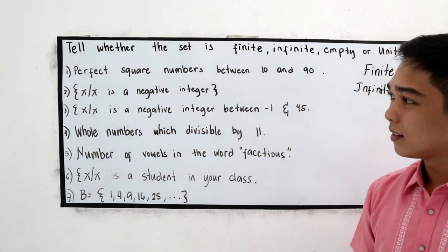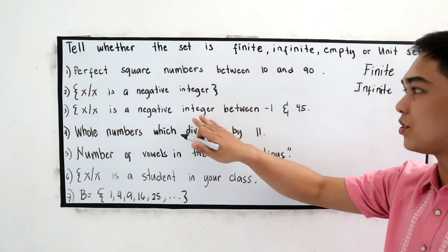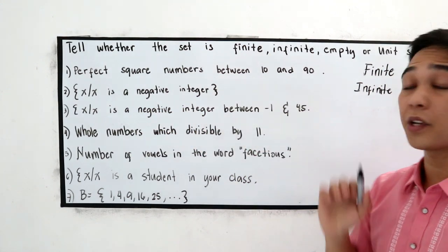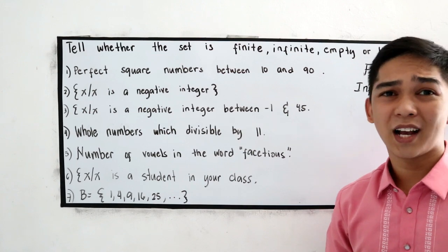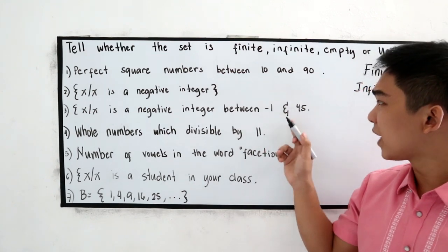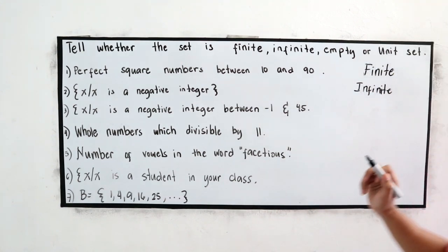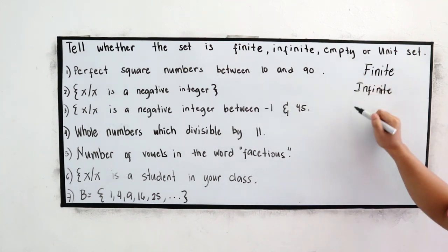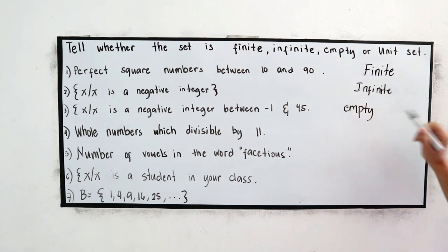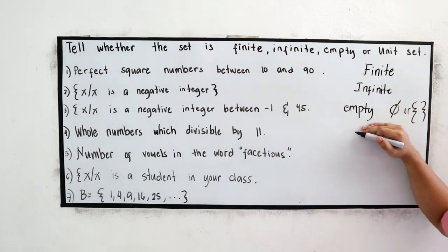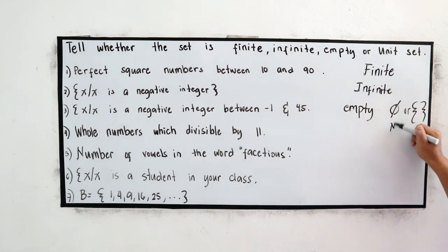Number three, x such that x is a negative integer between negative 1 and 45. Do we have a negative number between negative 1 and 45? None. So, this is empty. Empty set. Or we can use this symbol. Or, this one. This is the empty symbol. And this symbol also known as the null set. N-U-L-L. Null set. Or the empty set.